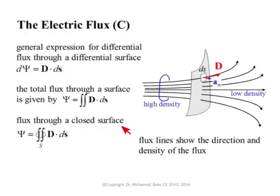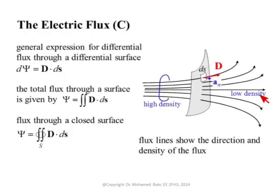For a closed surface — a surface that encloses a volume, like the surface of a sphere — you carry out the same integral to get the total flux flowing out. We have done closed surface integrals before in this course. Flux lines show us the direction and density of the flux, which is related to the direction and strength of the electric field. A high-density area indicates a stronger field; flux lines can have complicated shapes depending on the charge distribution.